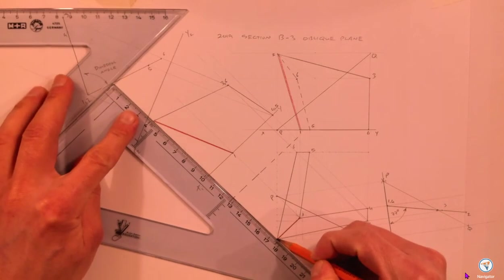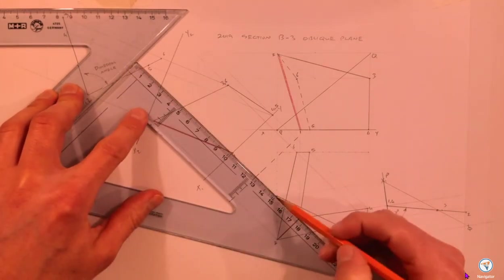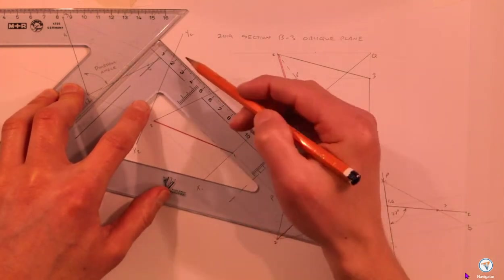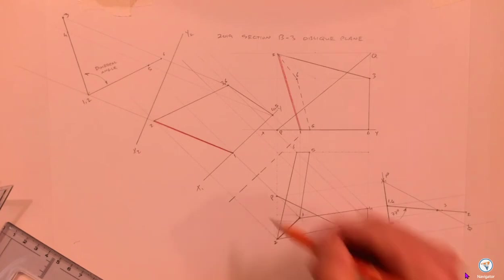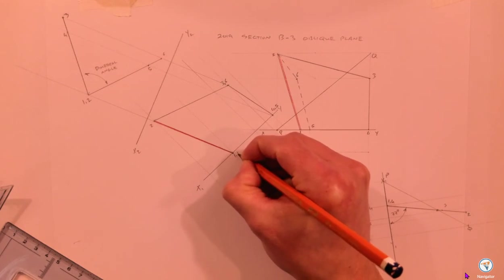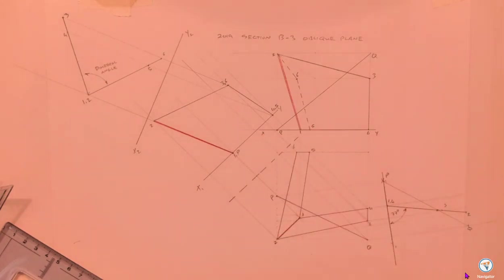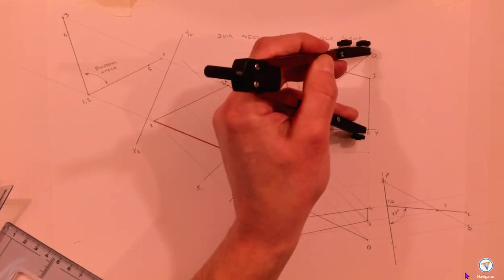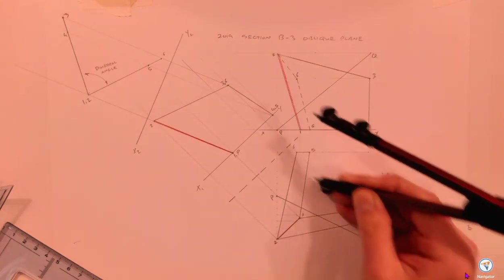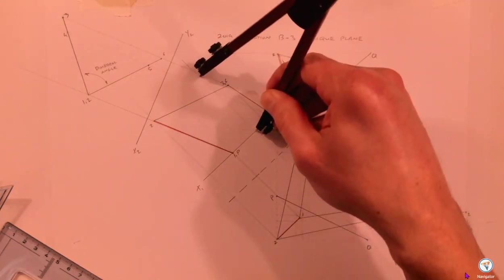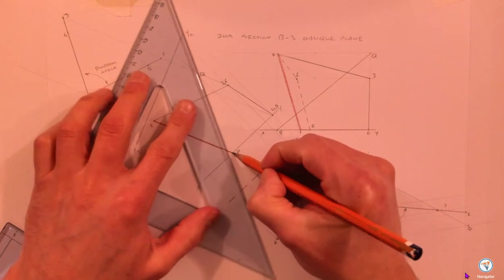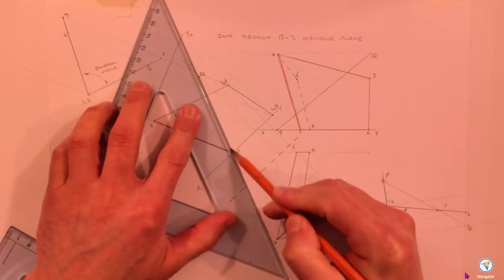First I project PQ into my auxiliary elevation. Here's my line of sight - I project up points P and Q. Height of P is zero, so P sits in the same position as point one. Height of Q - I follow up Q and strike it off in the elevation. That gives me my auxiliary elevation of line PQ.